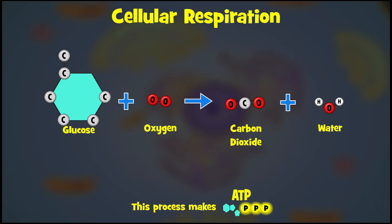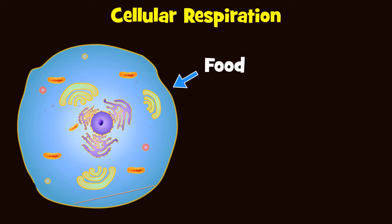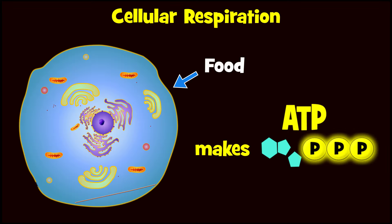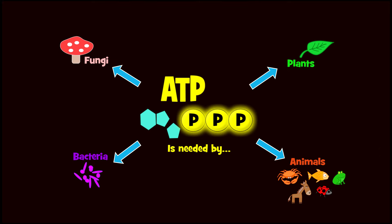One of the most important things that our cells do is cellular respiration. During respiration, our cells break down the food that we eat in order to make the energy that cells can use. This form of energy is a special molecule called ATP. Every living thing uses ATP as energy, so it is incredibly important. Without it, life as we know it would not exist.